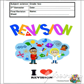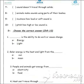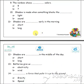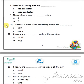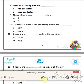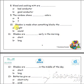Okay, let's continue our revision sheet — science revision sheets Grade 2, page 9. Number 10: a shadow is made when something blocks the light. Number 11: what is a shadow early in the morning — short or long? Long.